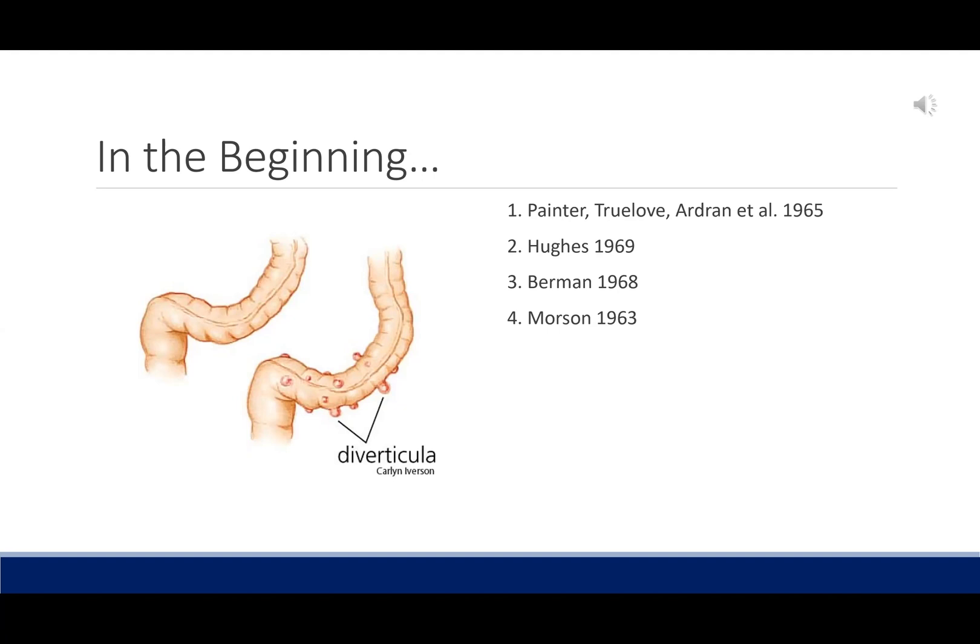Berman and Morrison also published their paper around the same time — Berman in Surgery, Gynecology, and Obstetrics, the predecessor to the Journal of the American College of Surgeons. This muscle thickening is a feature for many patients with diverticular disease; however, many patients do not exhibit this. Notice the years these studies were published — we've been telling patients the same thing for the last 50 years. But perhaps there's more to the story.